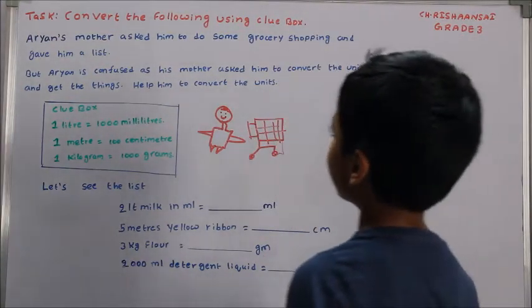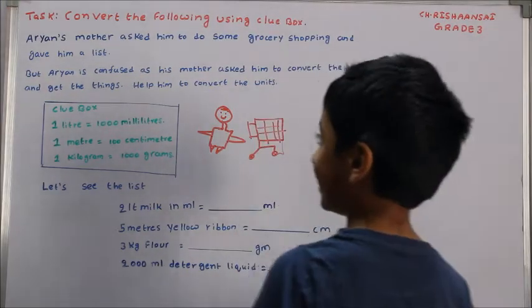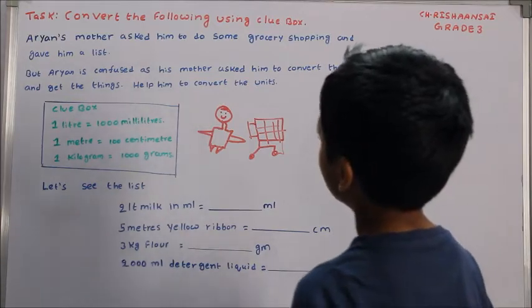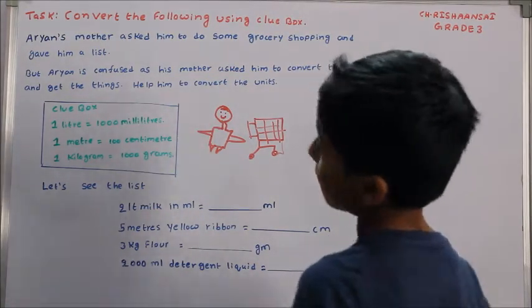Hi everyone, today let's look at the following using a clue box. Arian's mother asked him to do some grocery shopping and gave him a list.